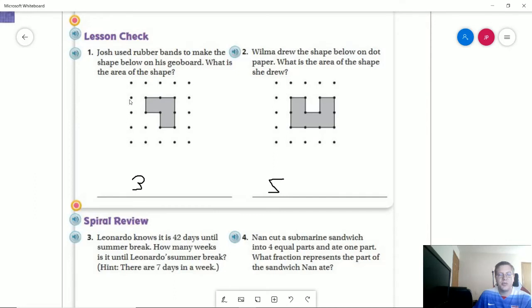Number one, Josh used rubber bands. And so we have three, and that would be three square units. I'm not taking the time to write out that extra part, but I would, if we were in class, expect you to start getting used to doing that. And then this one would be five square units.